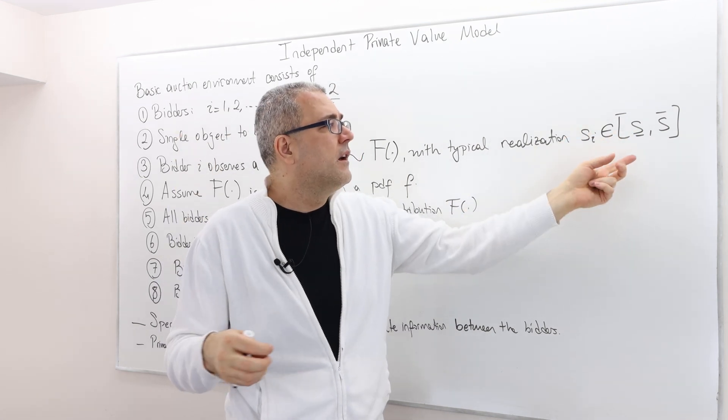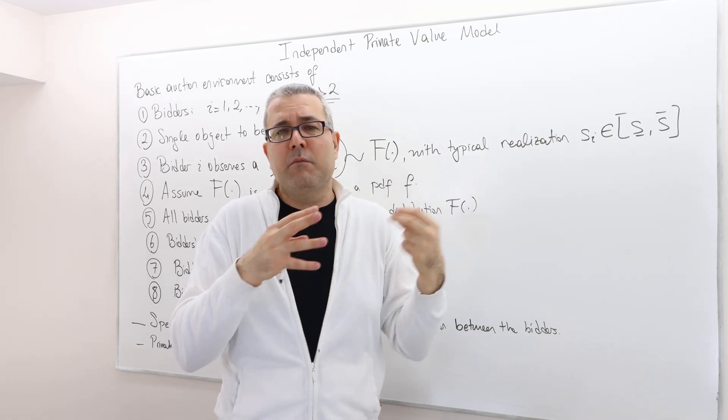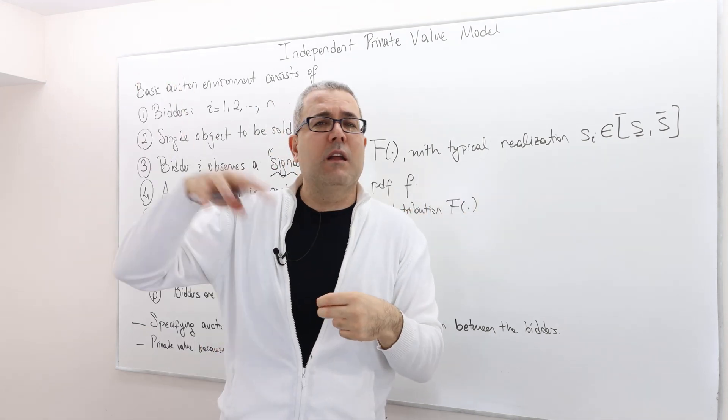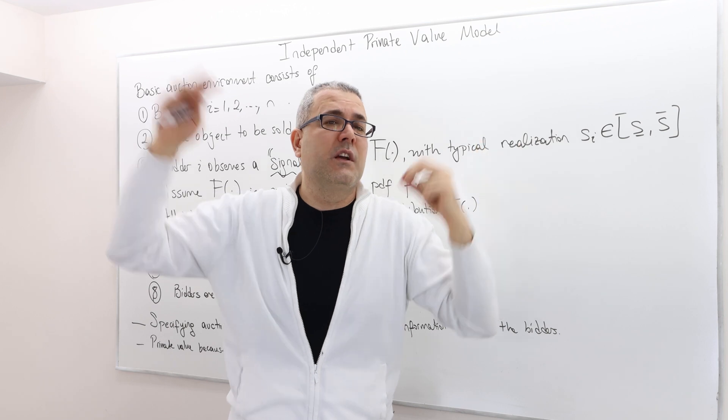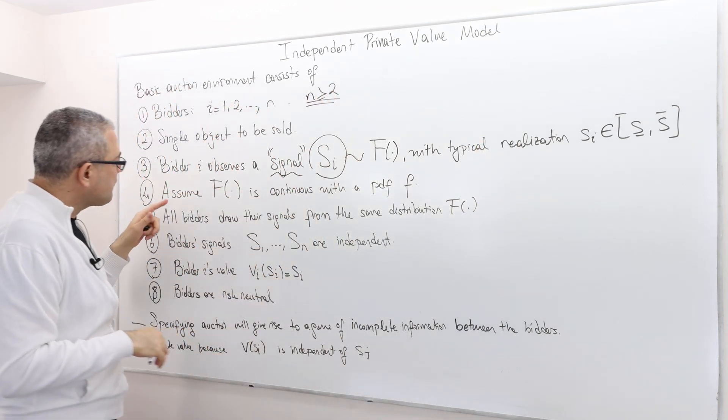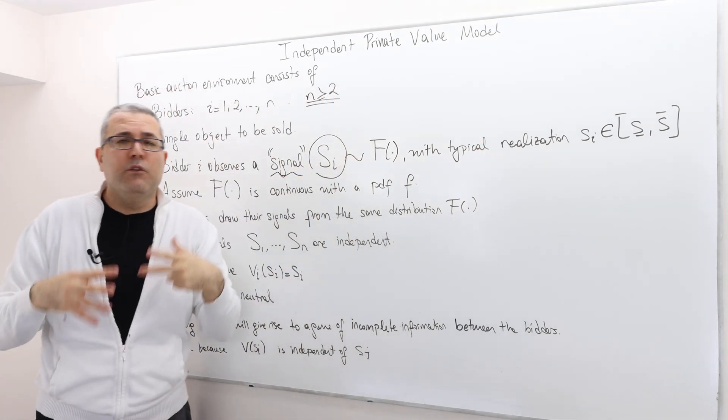Obviously, it can be—s lower bar can be zero, for example, and s upper bar can be some finite but very large number. F can be uniform distribution, normal distribution, binomial, any way you like—just some probability distribution function.